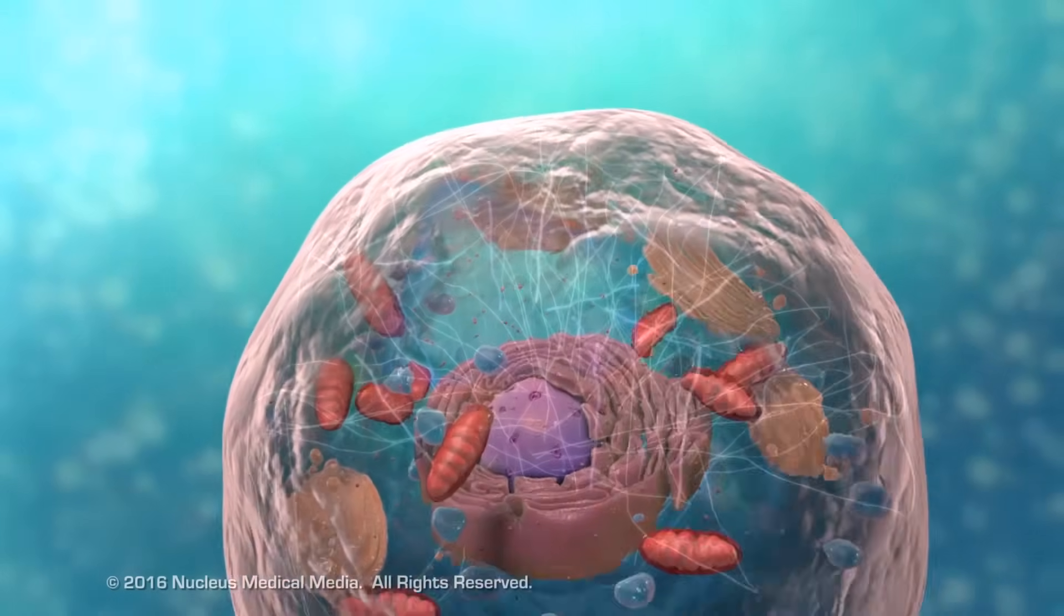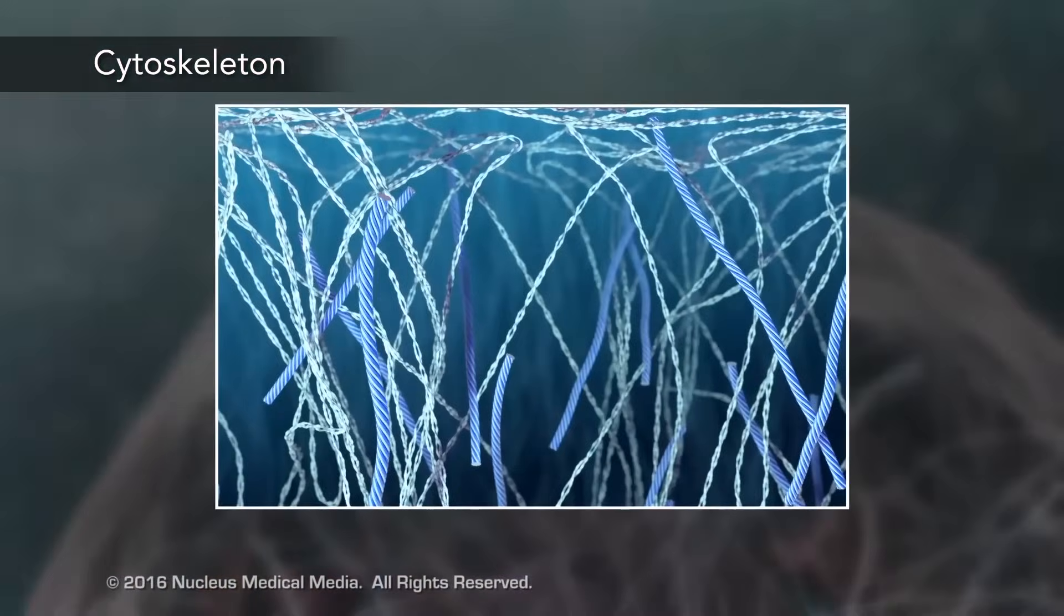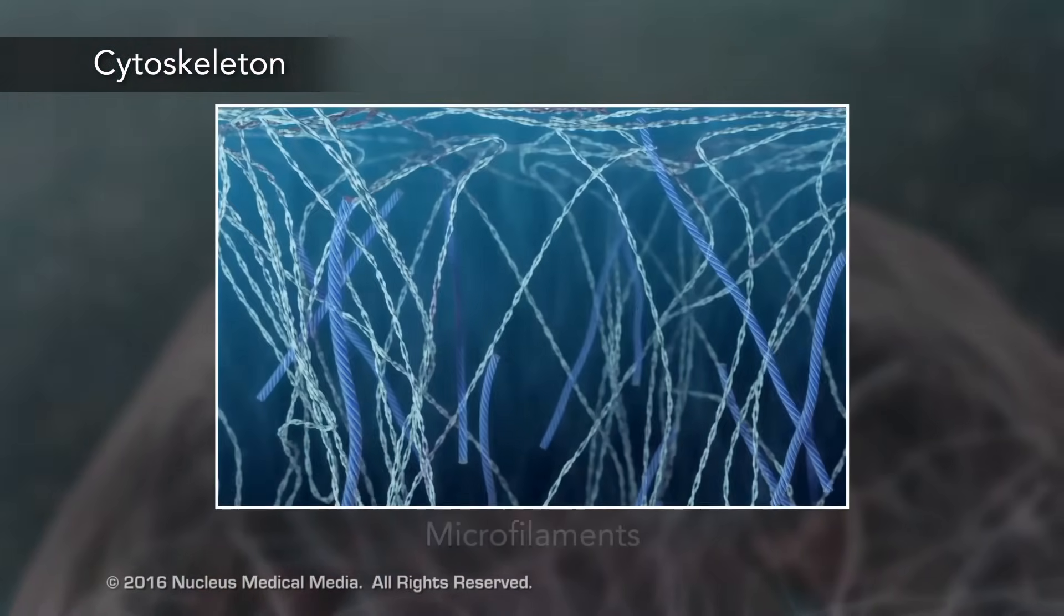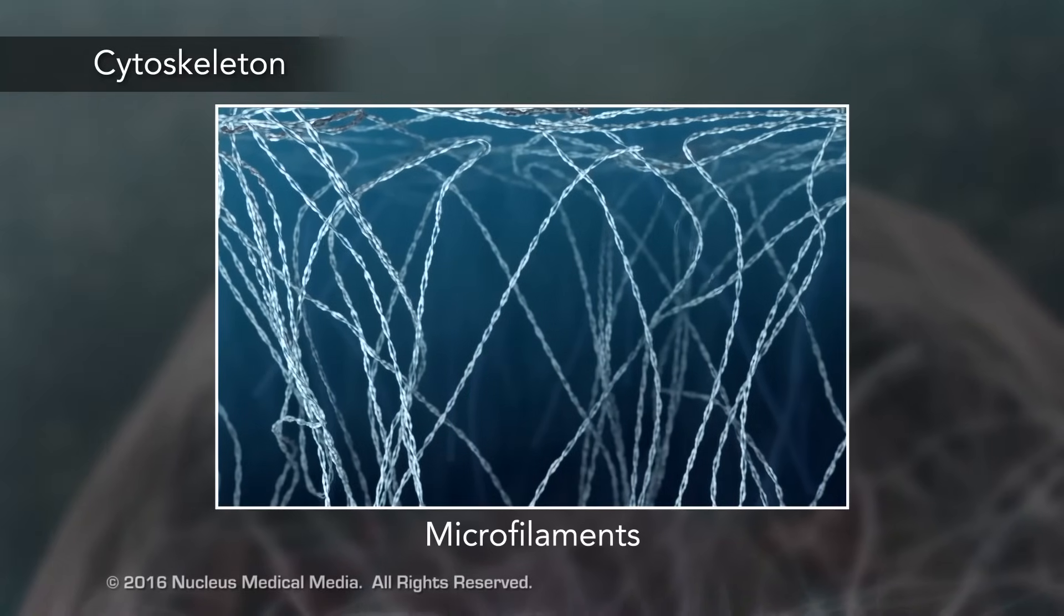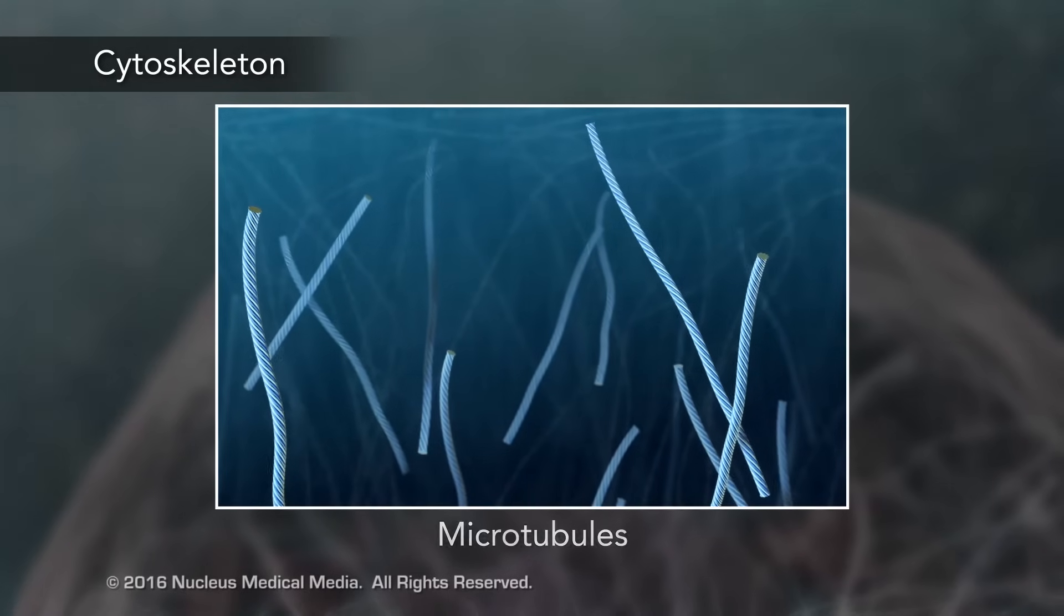Meanwhile, the cell maintains its shape through a cytoskeleton. The cytoskeleton includes the thread-like microfilaments, which are made of protein, and microtubules, which are thin, hollow tubes.